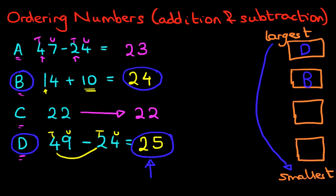We've now got A and C left. A is 23. C is 22. Which is the largest number? It is A.